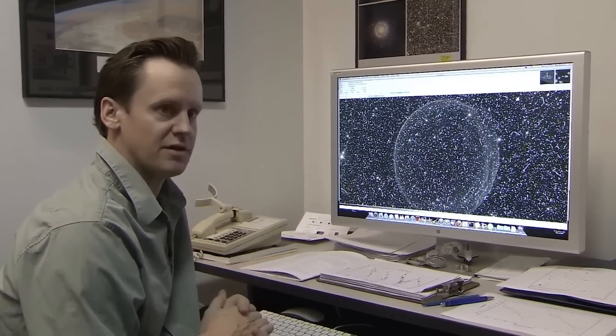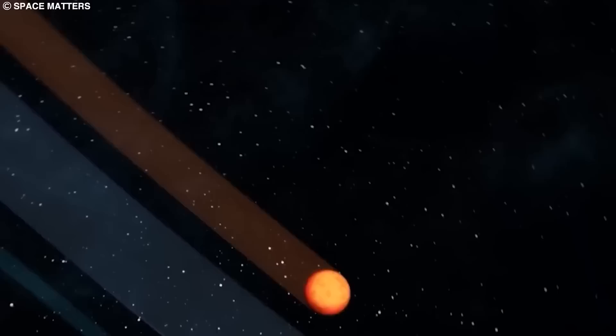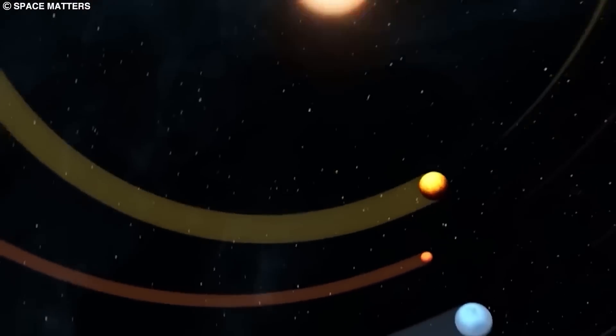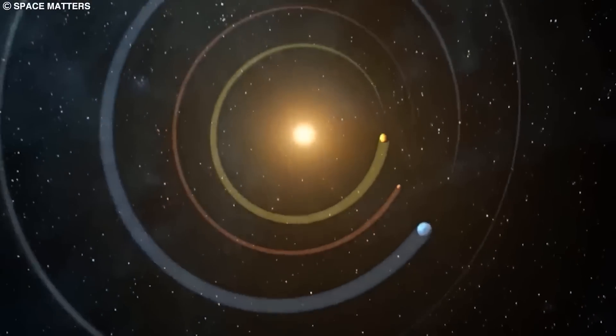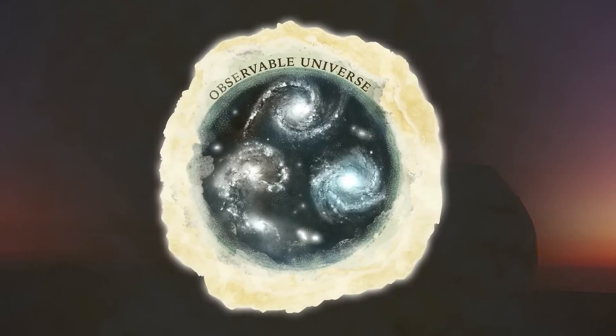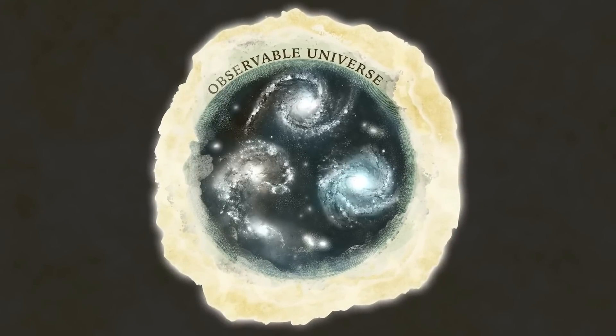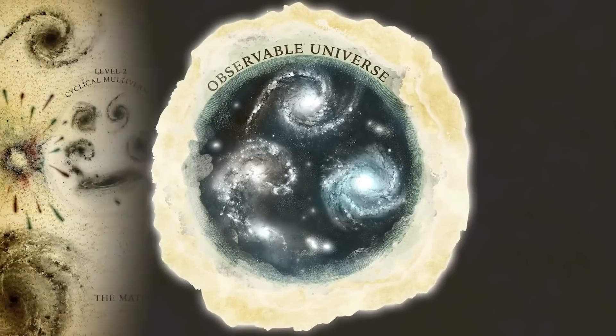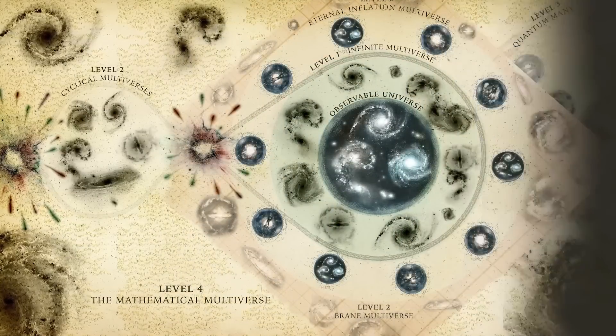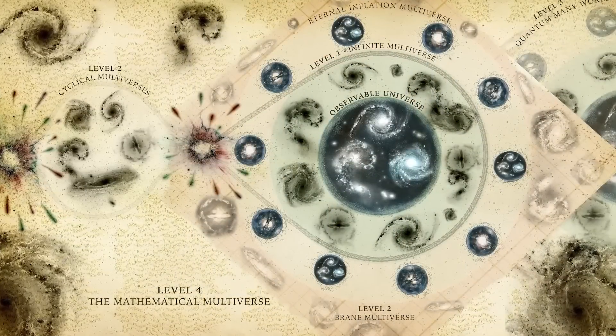And based on what we can see, it seems like space isn't curved like a ball or a saddle. Instead, it looks flat, which means that the part of the universe we can't see is probably much larger than what we can see. And here's the interesting part. It doesn't loop back on itself or have any empty spaces. If it's curved, then it's likely hundreds of times bigger than what we can observe.